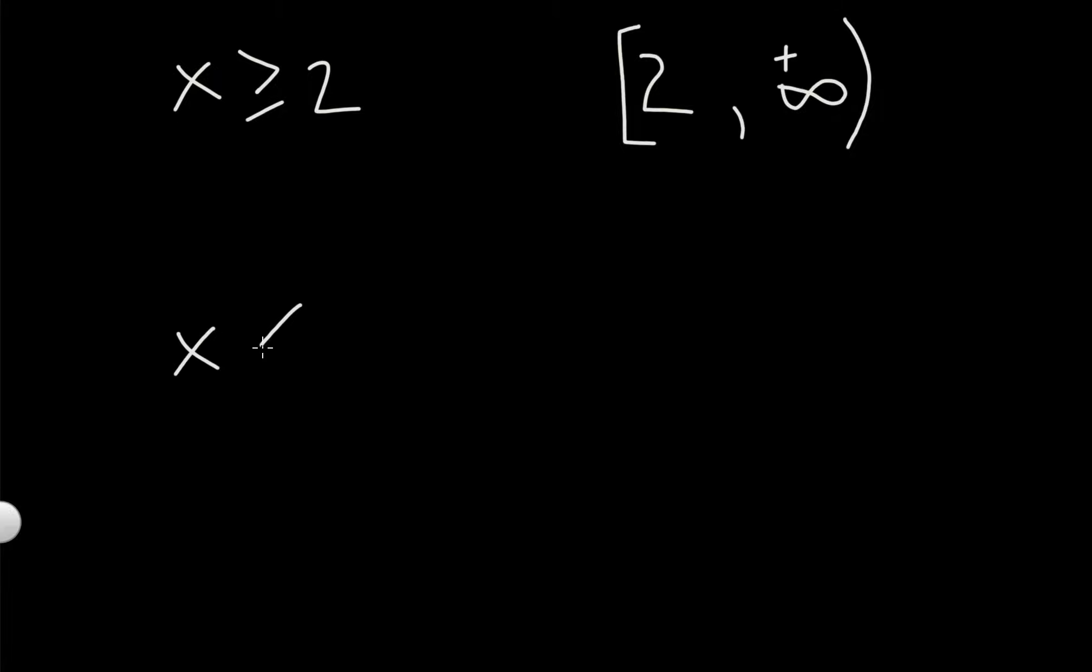Similarly, if I want x is less than negative 3, I'm going to find my least possible value. There is no least possible value because you're looking for anything that's less than or smaller than negative 3. So we would use negative infinity. Similarly, to positive infinity. It's not inclusive. And my greatest possible value is going to be my negative 3. This is exclusive as well because it's less than, not less than or equal to. And there you have interval notation.